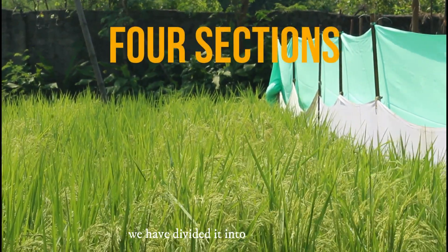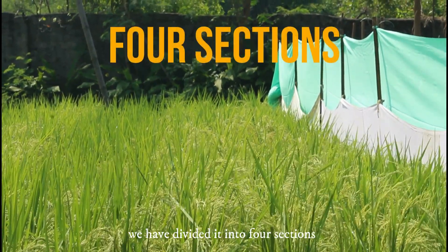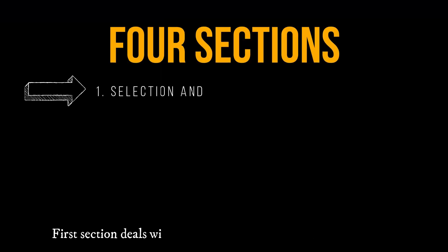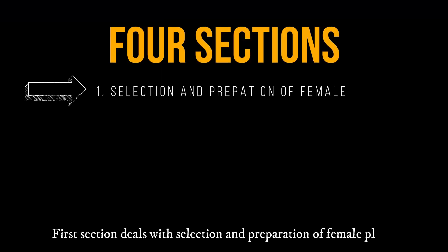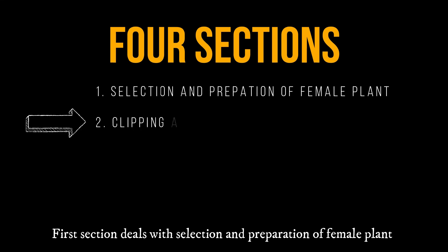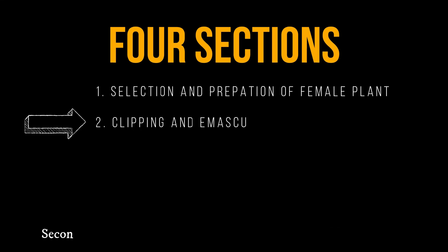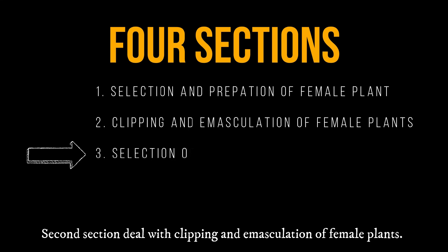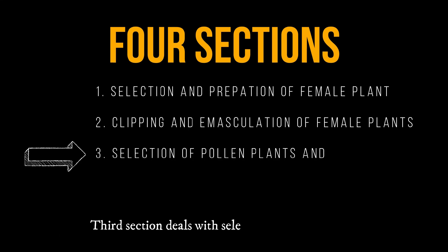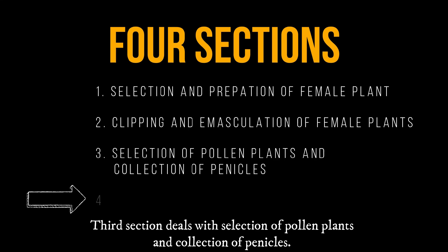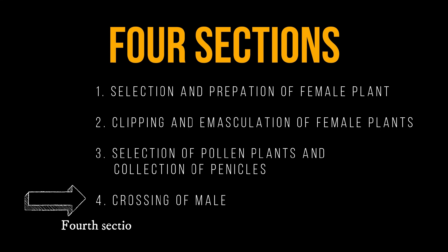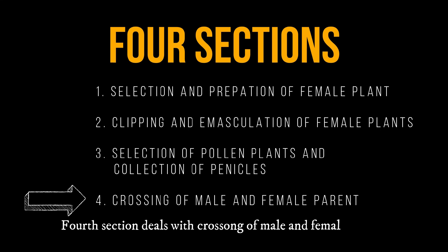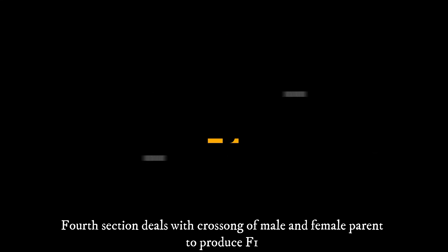For better understanding of the whole process, we have divided it into four sections. The first section deals with selection and preparation of female plants. The second section deals with clipping and emasculation of female plants. The third section deals with selection of pollen plants and collection of panicles. The fourth section deals with crossing of male and female parents to produce F1.